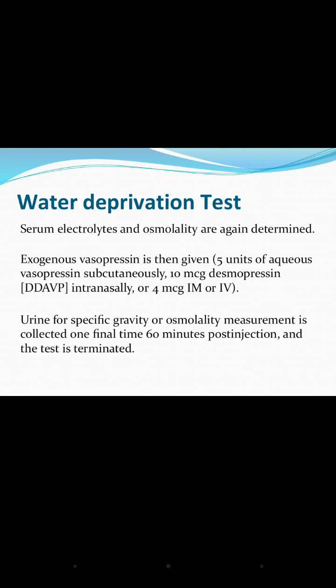During the test, serum electrolytes, weight, serum osmolality, and urine osmolality are determined hourly. Then vasopressin is administered: 5 units subcutaneously, or 10 micrograms of desmopressin intranasally, or 4 micrograms IM or IV. Urine specific gravity and osmolality are checked again after one hour, and the test is terminated.